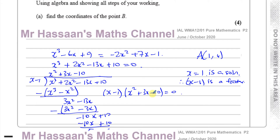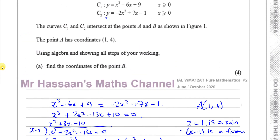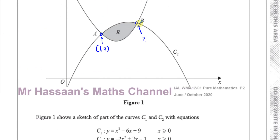So we have (x minus 1)(x squared plus 3x minus 10) equals 0. Factorizing the quadratic further gives solutions x equals 1 (already known), x equals minus 5, and x equals 2. Point B must be the positive solution, so x equals 2.